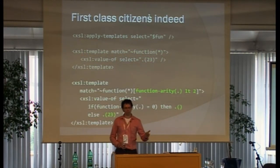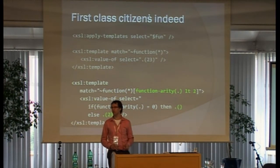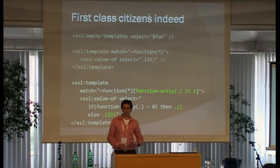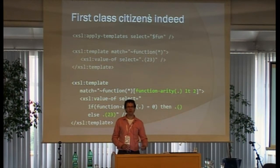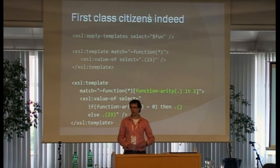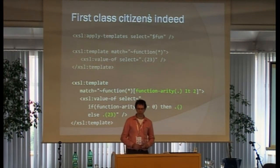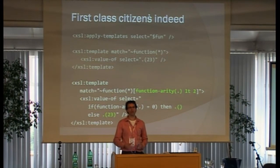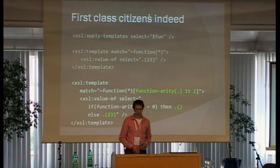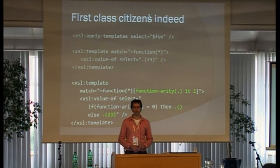Now, if you write a match that catches every function, you don't quite know what kind of functions are passed in, so you might want a bit more control. Here I add the expression function-arity, which gives the arity of a function — how many parameters the function actually takes — which selects all functions I created with zero or one parameters. Inside the template, I'm selecting based on the arity what kind of function call to make, because if I wouldn't check for function arity, I might get an error at runtime.